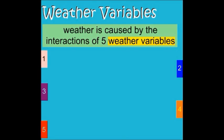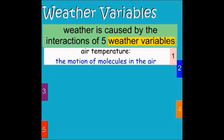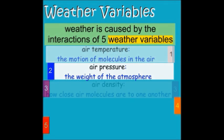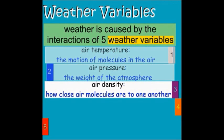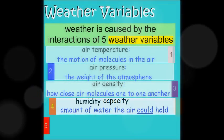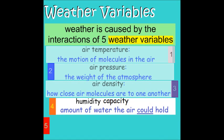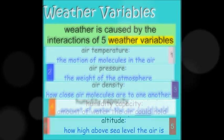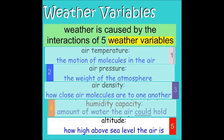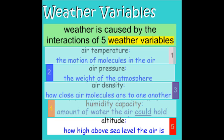Those five weather variables include: air temperature, which is the motion of molecules in the air; air pressure, which is the weight of the atmosphere; air density, which is how close the air molecules are to one another; humidity, where capacity refers to how much water the air could hold; and lastly, altitude, which is how high above sea level the air is. Changing any combination of those five variables causes a change in the weather.